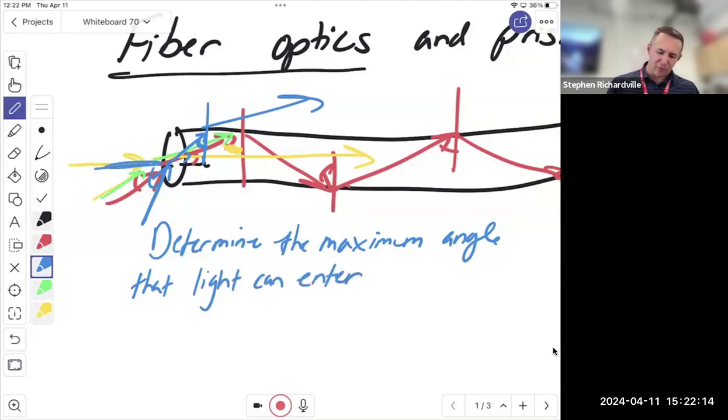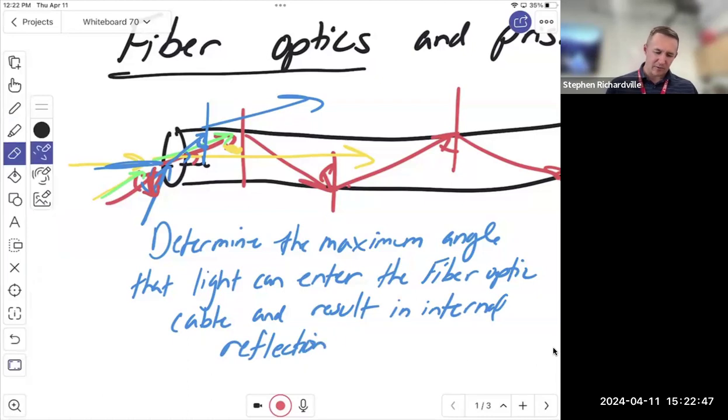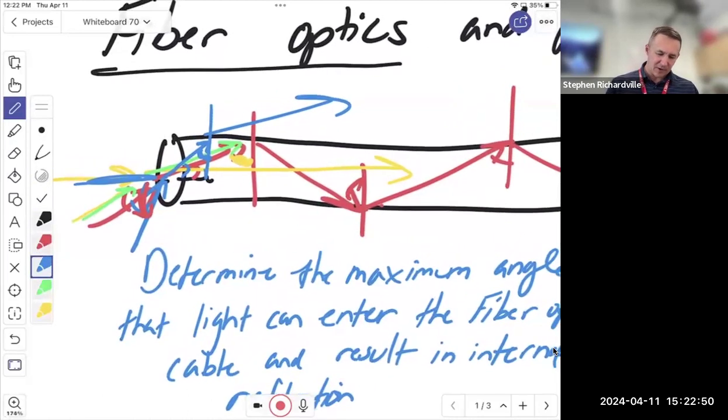Remember, everything is measured to the normal. So what's the biggest angle over here I can do from the normal and still get light to stay in? So determine the maximum angle. So why is it maximum? Because what's going to happen again is, I'll draw this in black.